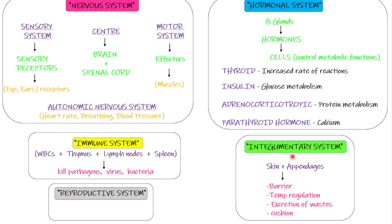The integumentary system consists of skin and appendages like nails. Skin acts as a barrier, regulates body temperature through sweating, excretes some waste products, and provides a cushioning effect. Temperature regulation is a very important homeostatic function, mainly regulated by the skin.